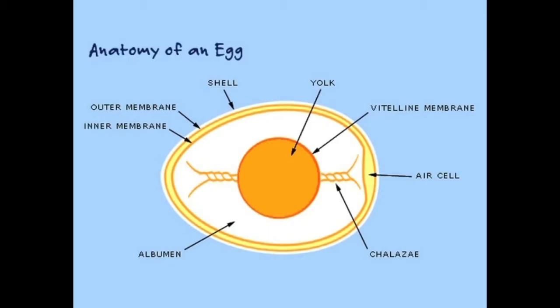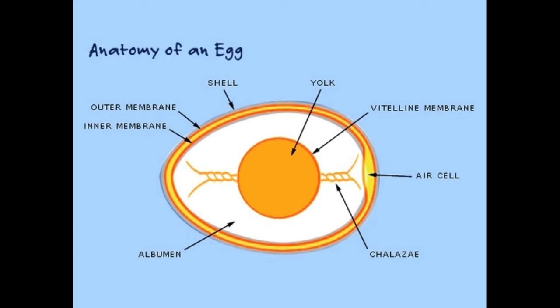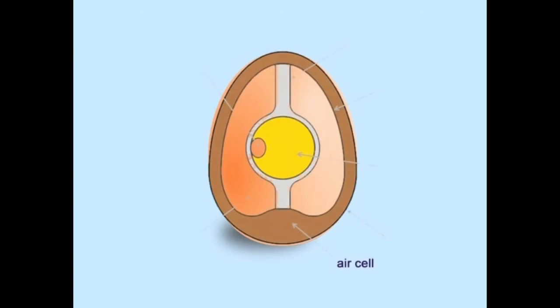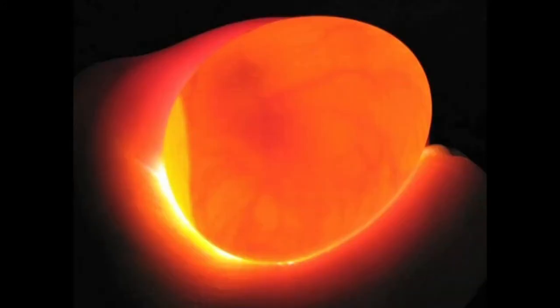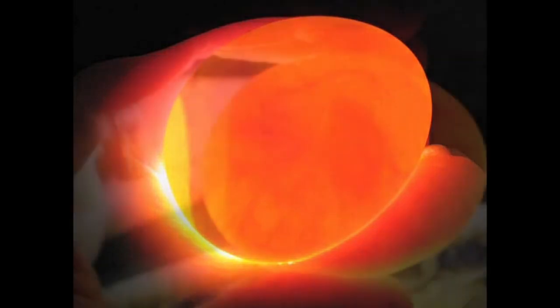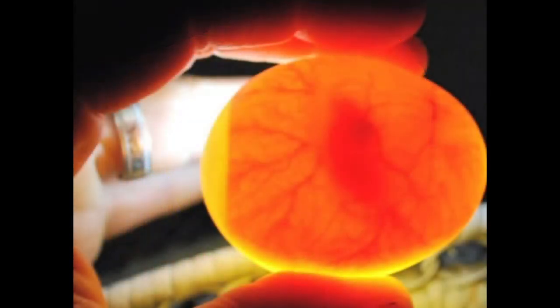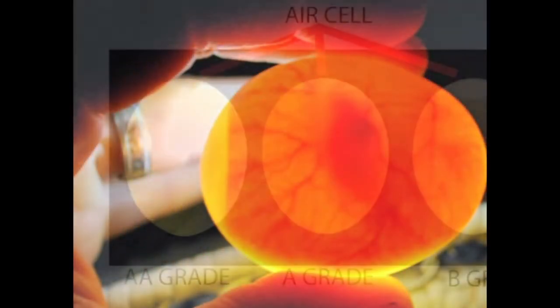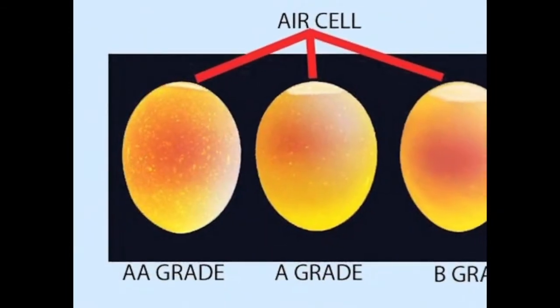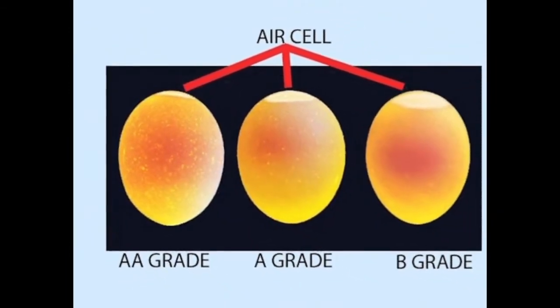Inside the shell is the outer shell membrane which is slightly thick, and then inside the outer shell membrane is the inner shell membrane. These two membranes also help to protect the inner contents of the egg. The eggs contain little or no air cells when they are laid. However, after being laid, because of a contraction of the inner contents due to change in temperature, a large air cell is formed at the large end of the egg between the two shell membranes.